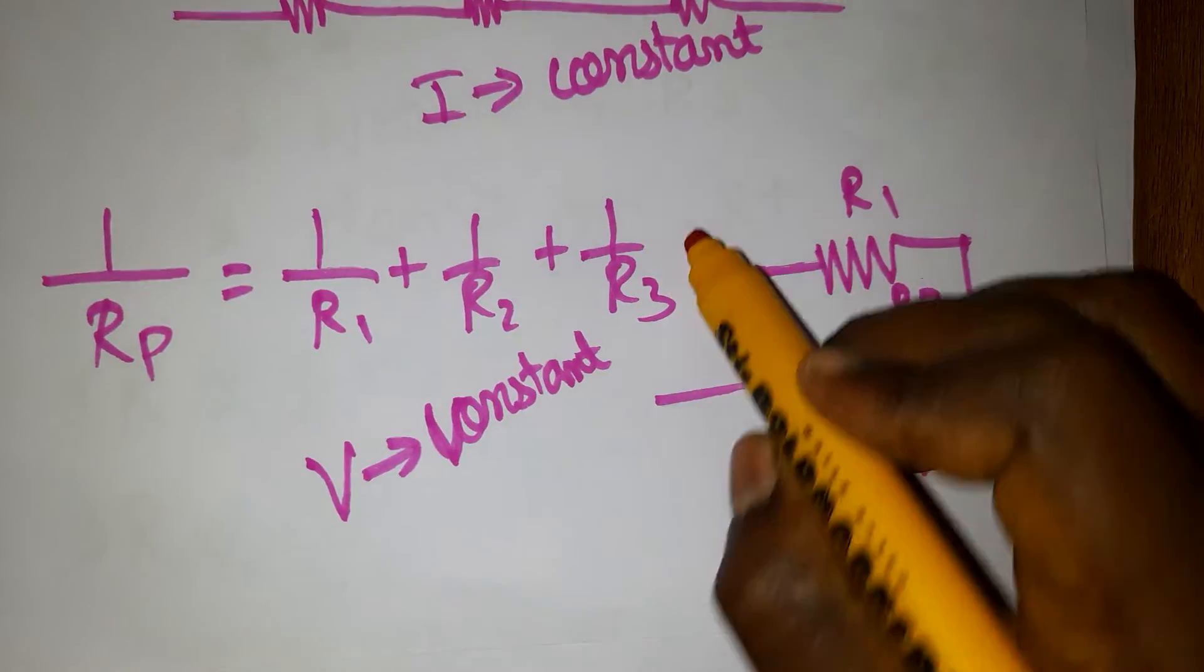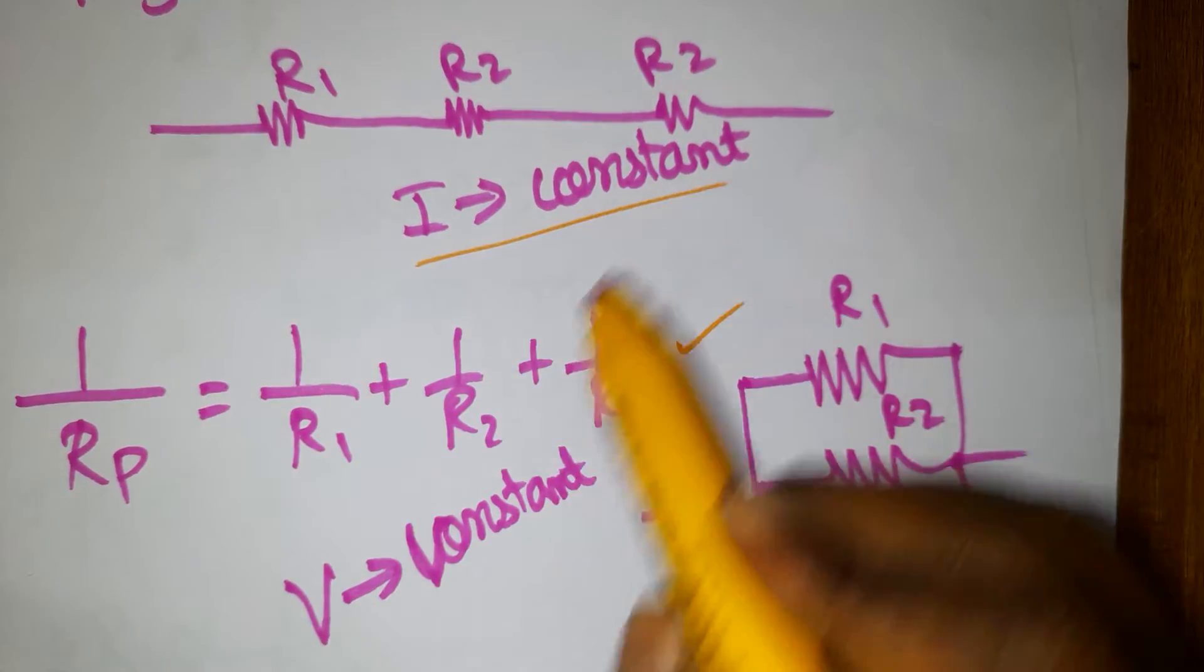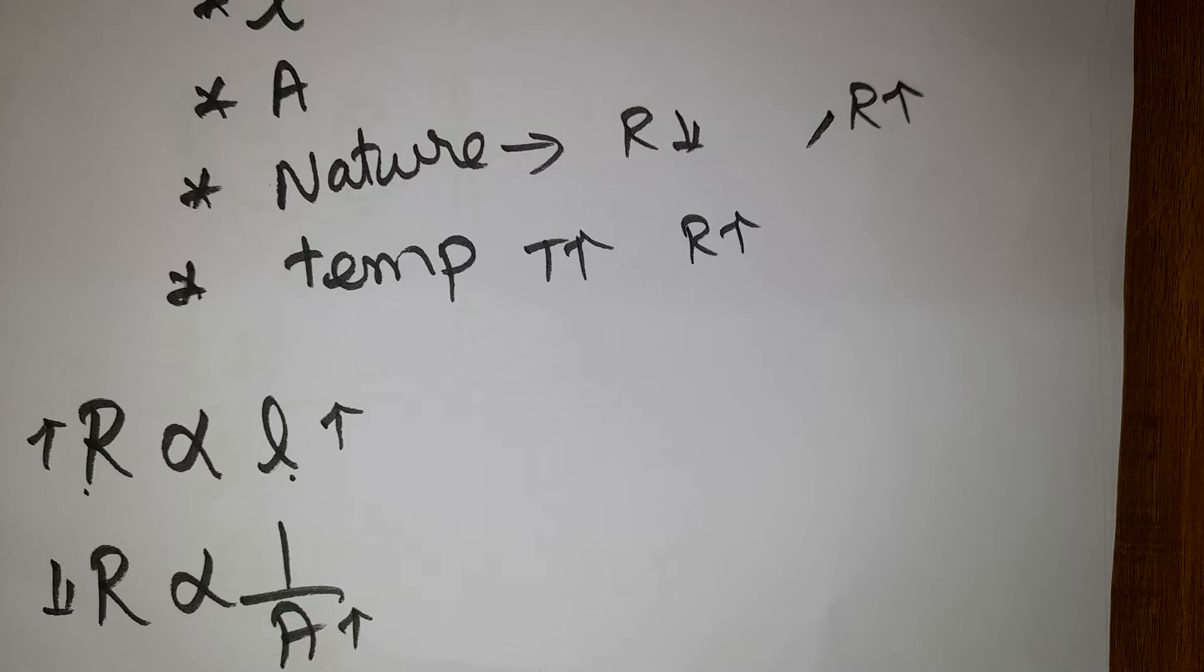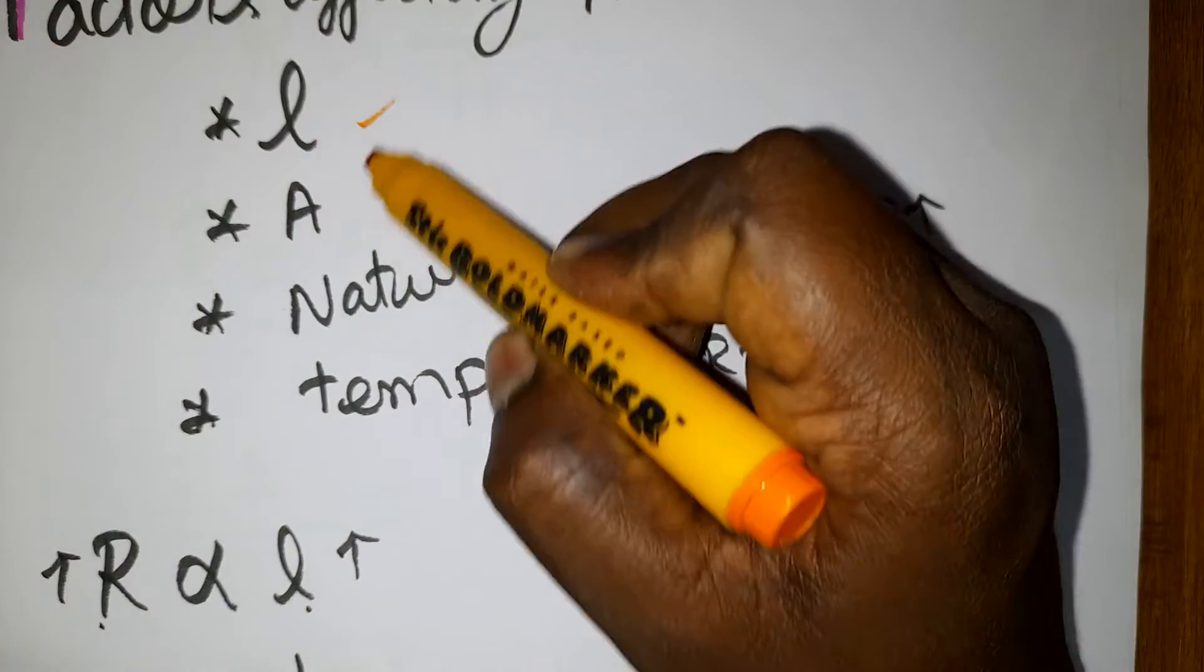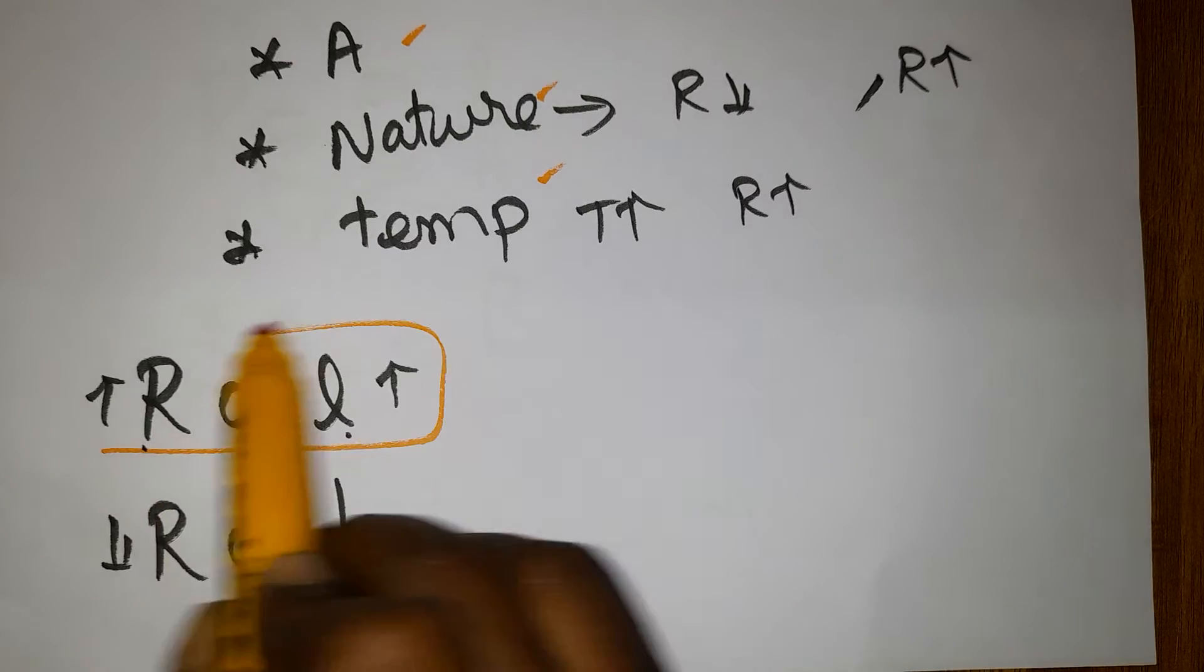These equations are for resistance in series and parallel. In series, current is constant. In parallel, voltage is constant. The factors affecting resistance are length, area, nature, and temperature.